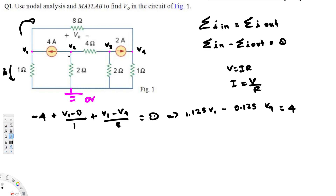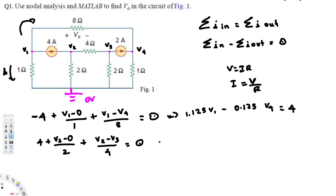For the second node, the 4-ampere current is leaving, so we write positive 4. Assuming the remaining currents are leaving, we get (V2 − 0)/2 plus (V2 − V3)/4 = 0. Simplifying gives the second equation: 0.75·V2 − 0.25·V3 = −4.